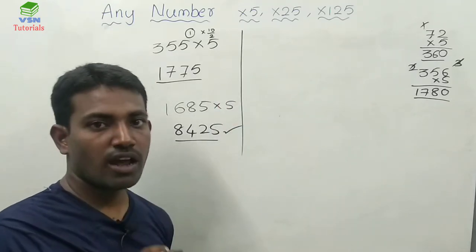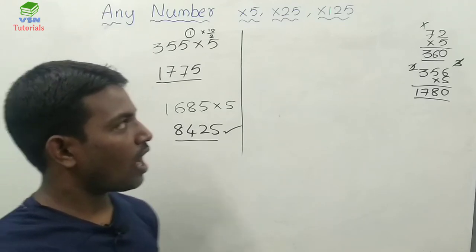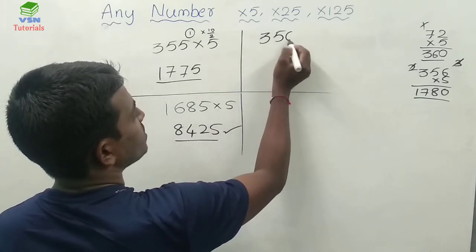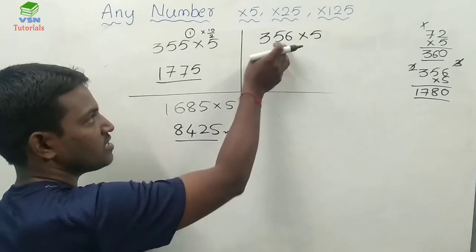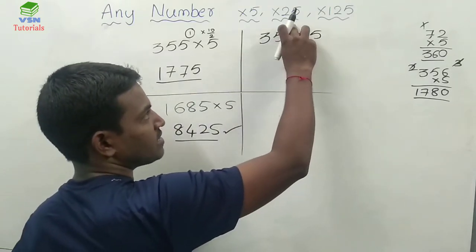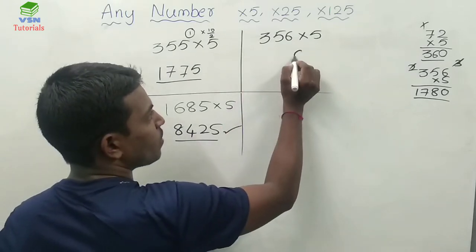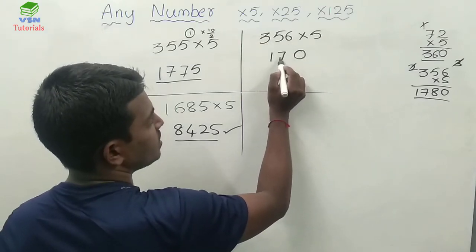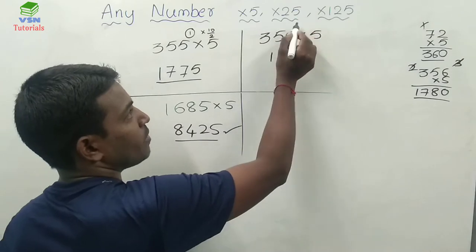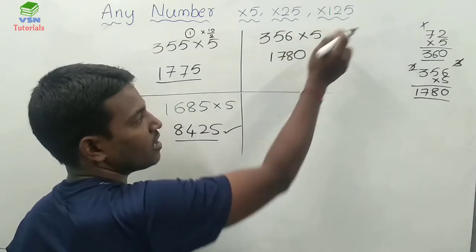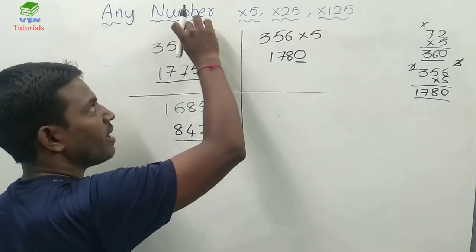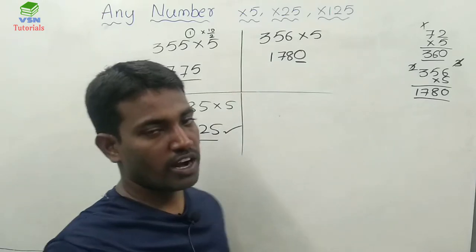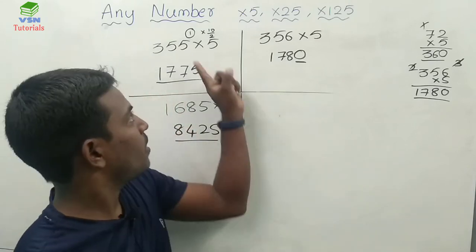I hope you have understood this trick. To conclude: for 356 into 5, this is an even number. Whenever an even number is multiplied by 5, lastly you add 0 — because the remainder is 0 and you multiply directly by 10. Whenever you get the remainder as 1, you add 5. That is the only difference between an even number and an odd number when multiplying by 5.